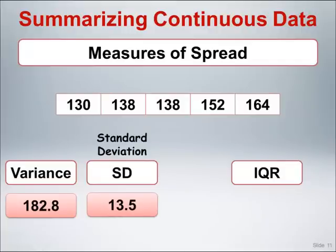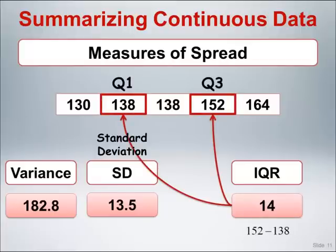Now let's get back to the calculation of the IQR. The IQR is a single number and is equal to the difference between the third quartile and the first quartile, here equal to 152 minus 138, which is a difference in blood pressures of 14 points.